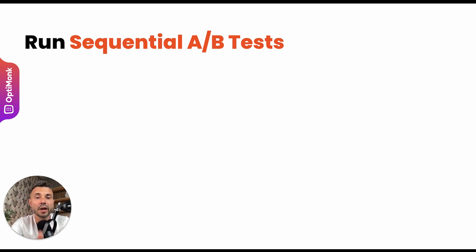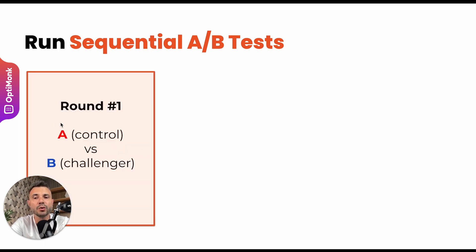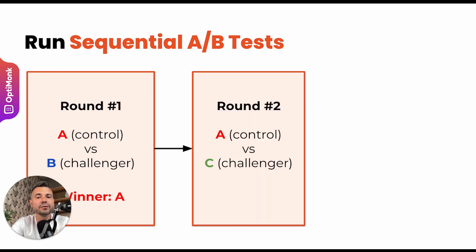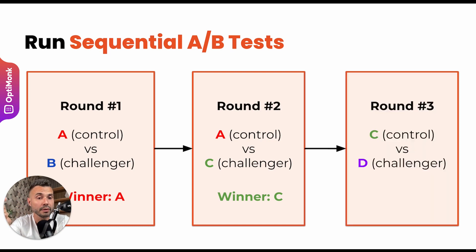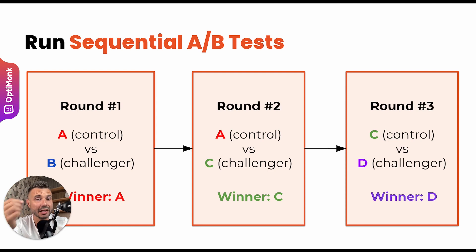Run A/B tests one after the other. For example, if you have one A/B test with one challenger and a control, and the challenger loses — discard that challenger and test the original control against the next challenger, version C. But if the challenger beats the control, let that new challenger become the new control, and the next A/B test should test this new control against the next challenger. This is how you can A/B test the fastest with limited traffic.